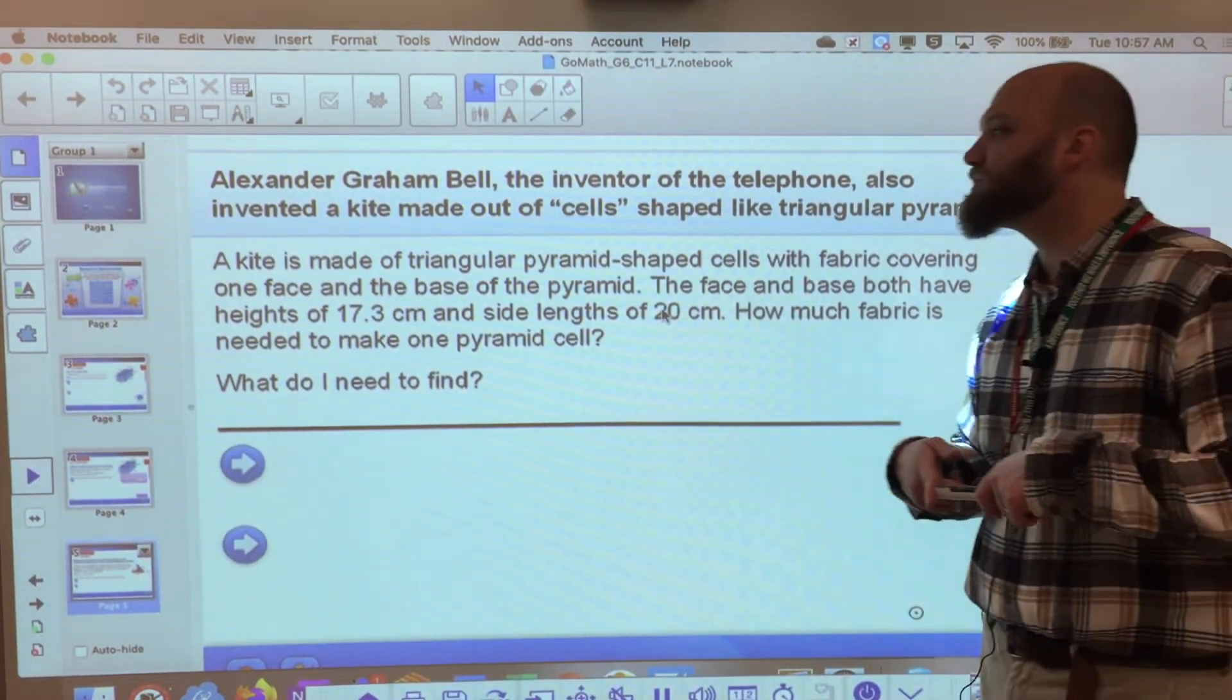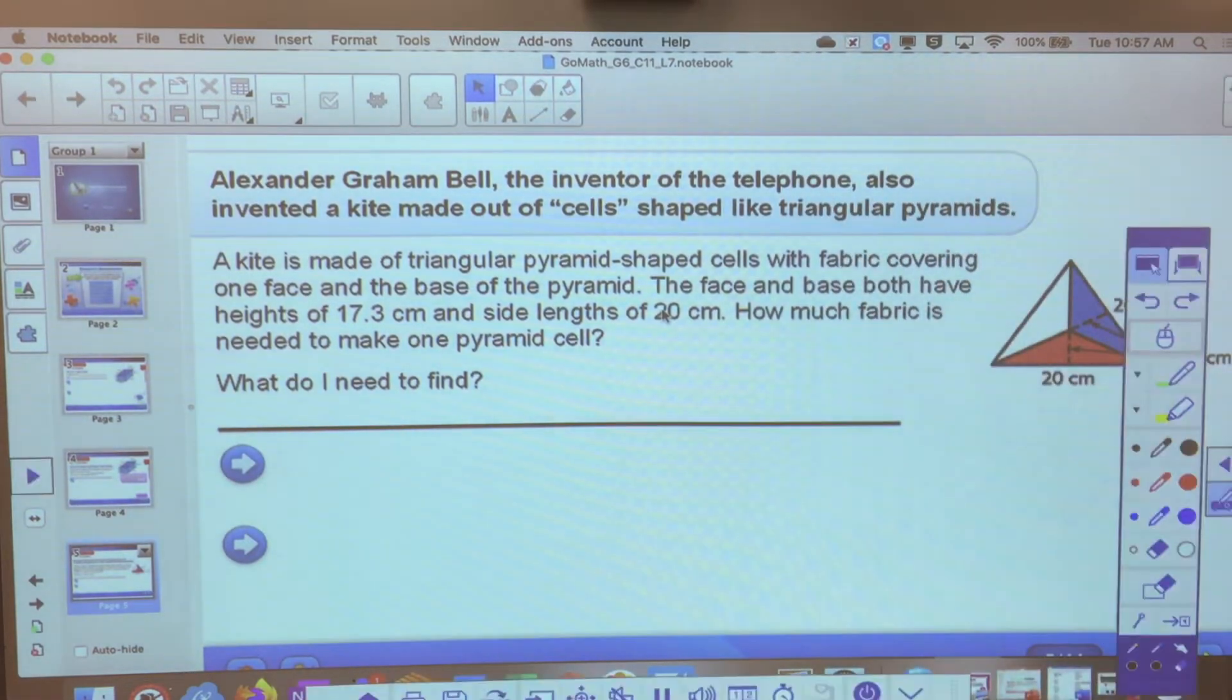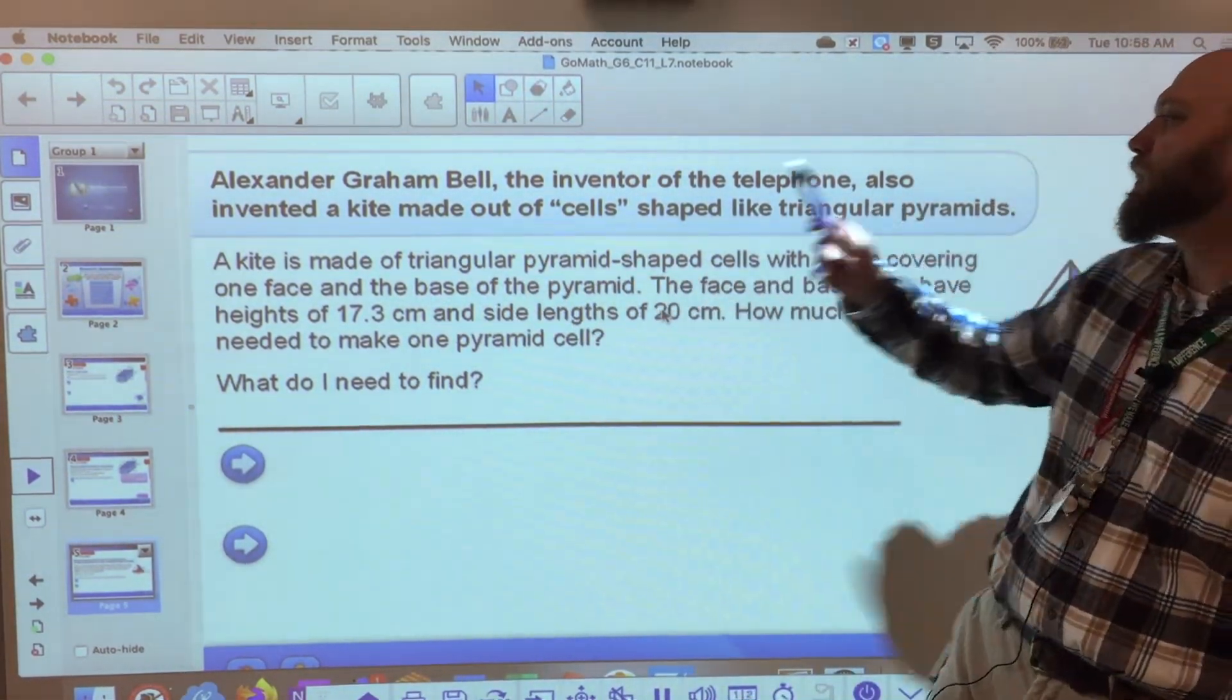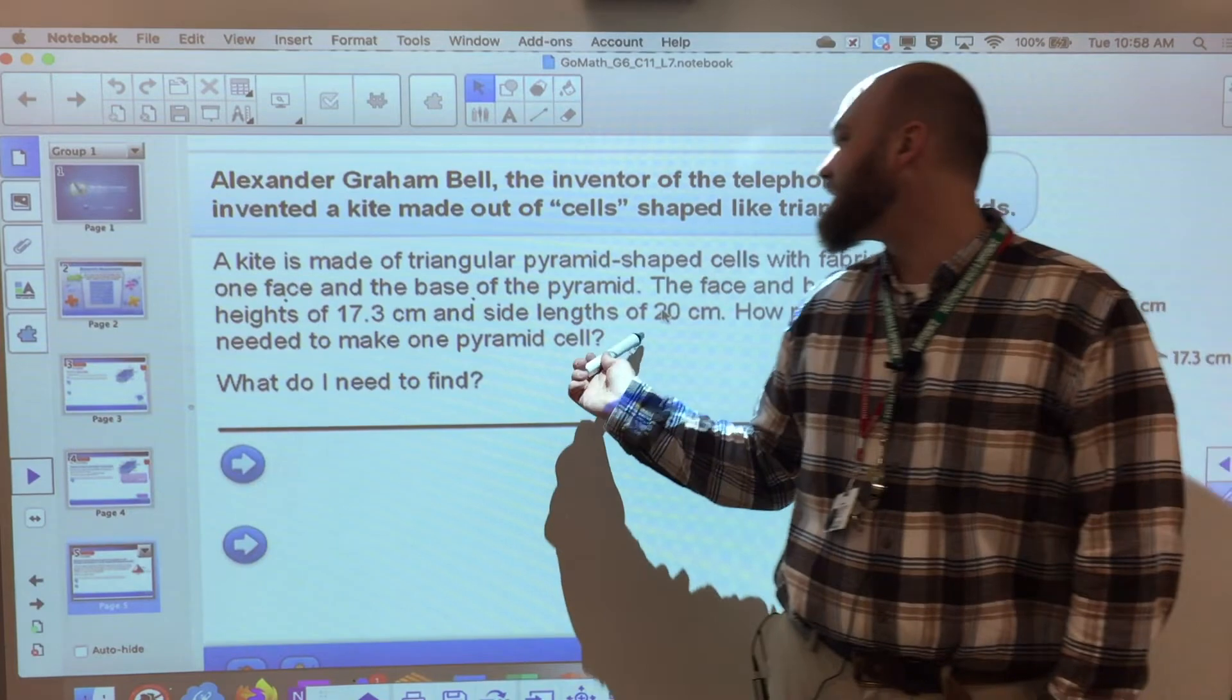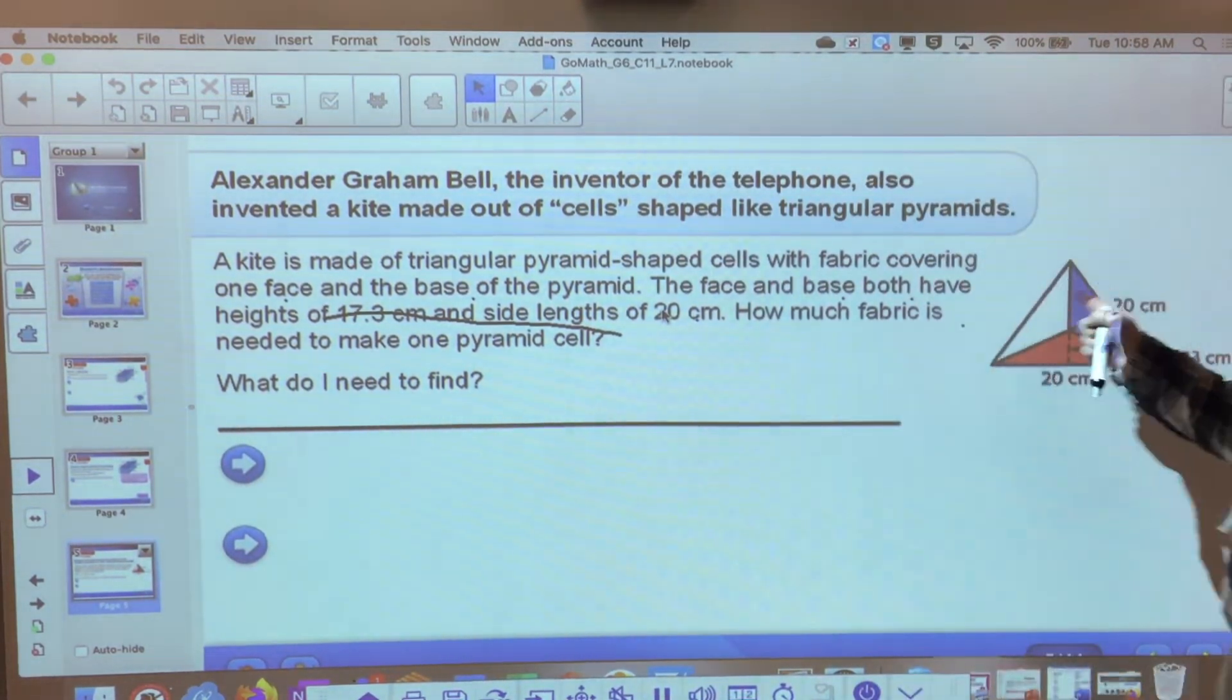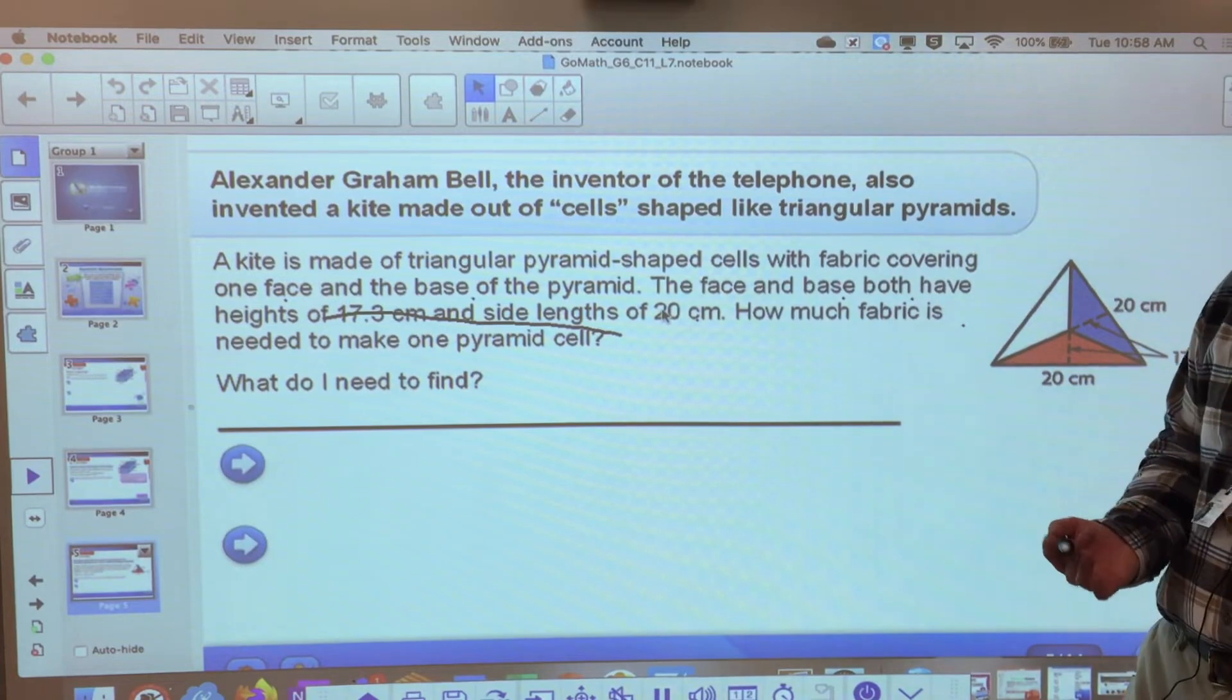Alexander Graham Bell, inventor of the telephone, also invented a kite made out of cells of a triangular pyramid. So my triangular pyramid looks something like this. Now, the question that I had, kite made out of triangular pyramid shaped cells with fabric covering one face and the base of the pyramid. The face and base both have heights of 17.3 centimeters, side length of 20 centimeters. How much fabric is needed to make one pyramid cell? So I have three pyramids here. One, two, three. But I only have fabric on two of them.